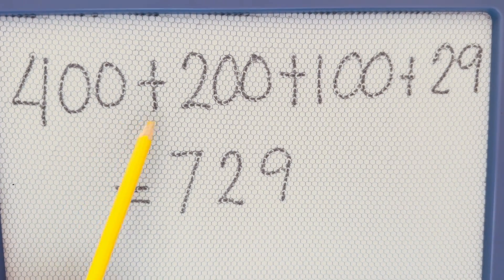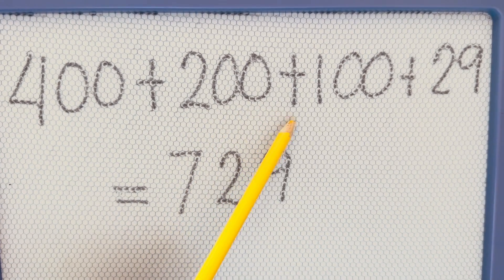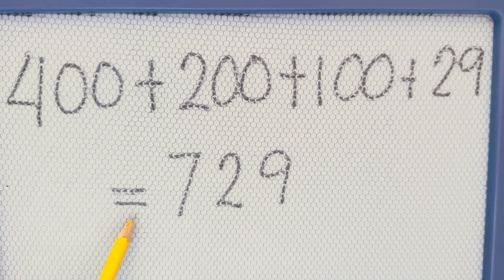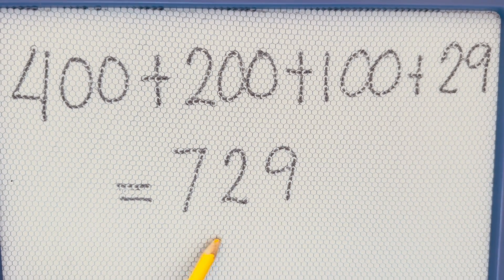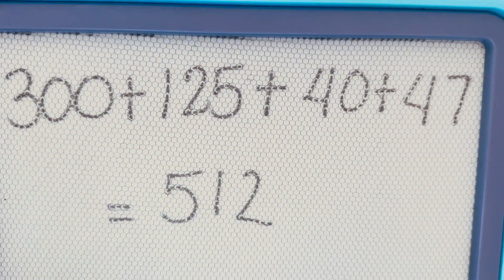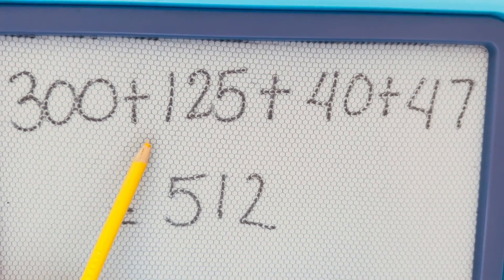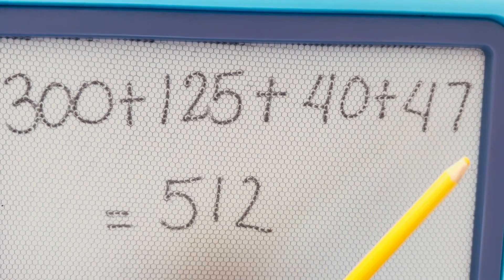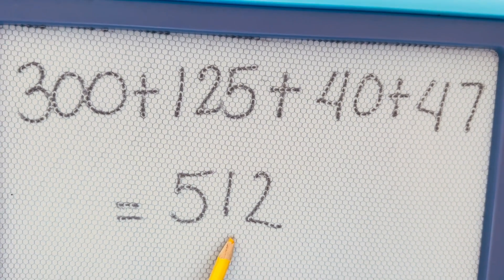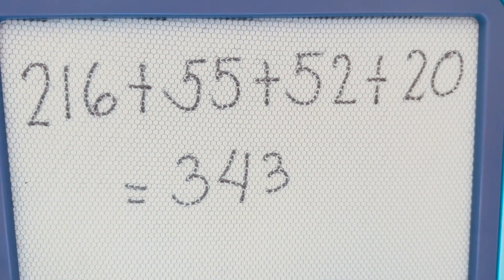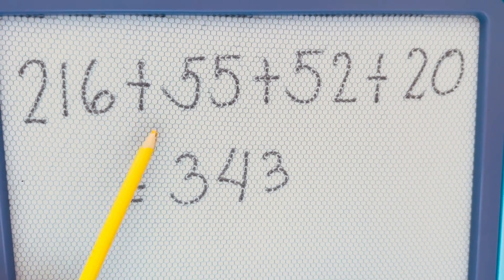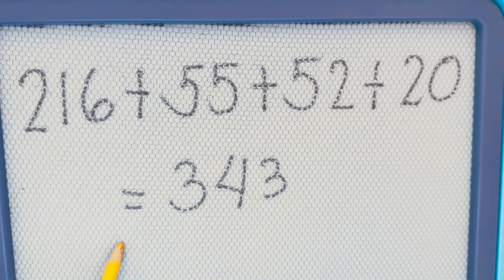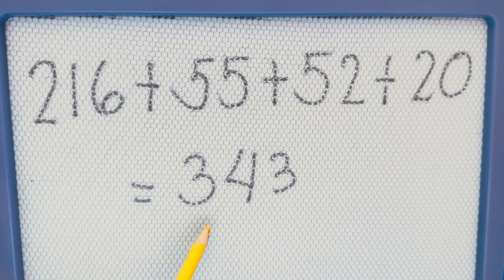400 plus 200 plus 100 plus 29 is equals to 729. 300 plus 125 plus 40 plus 47 is equals to 512. 216 plus 55 plus 52 plus 20 is equals to 343.